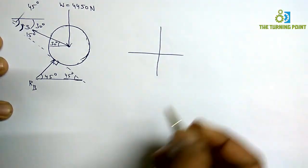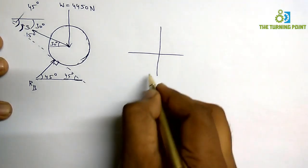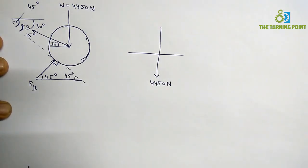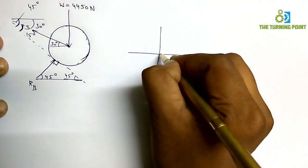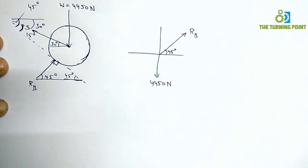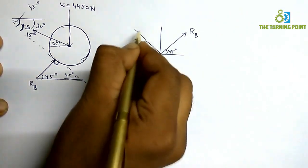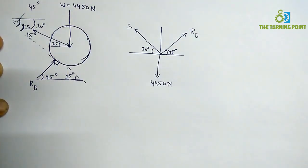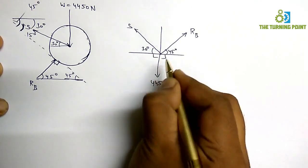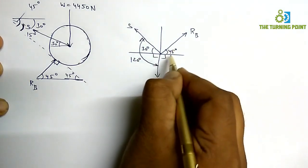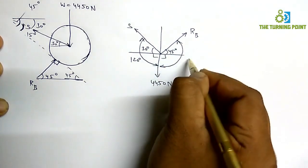Draw the XY axis. I will represent the weight — 4450 Newtons vertically downwards. RB is making an inclination of 45 degrees with the horizontal. The tensile force S is making an inclination of 30 degrees with the horizontal. So this angle is 90 plus 30, which gives 120 degrees, and 45 plus 90 gives 135 degrees.